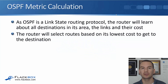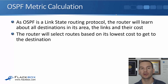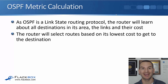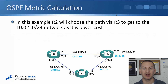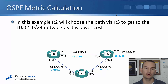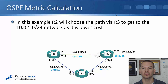In this lecture you'll learn about the OSPF metric, which is the cost. As OSPF is a link state routing protocol, the router will learn about all the destinations in its area, the links to get there and their cost. The router will select routes based on the lowest cost to get to the destination, and that's the route that will make it into the routing table.